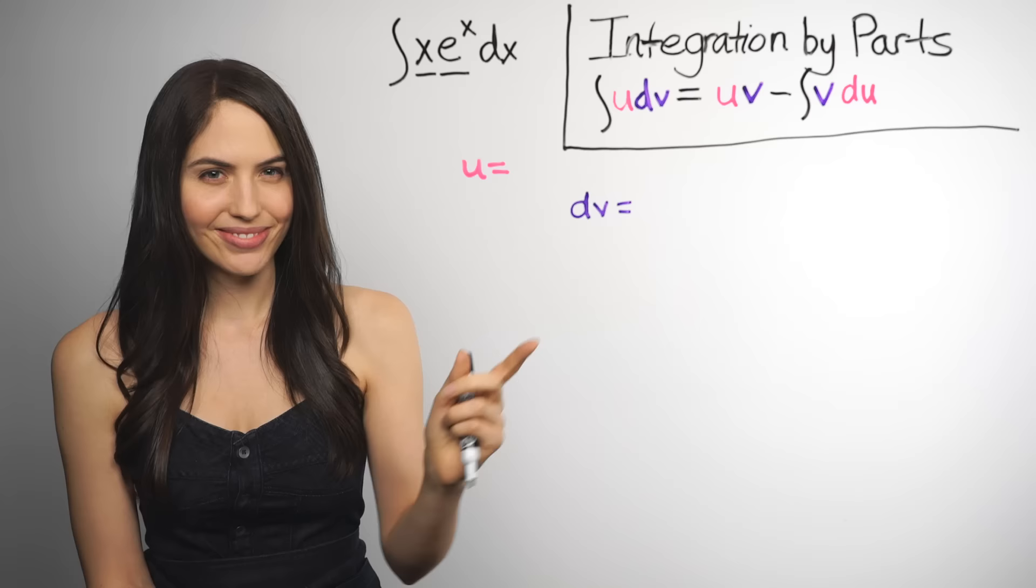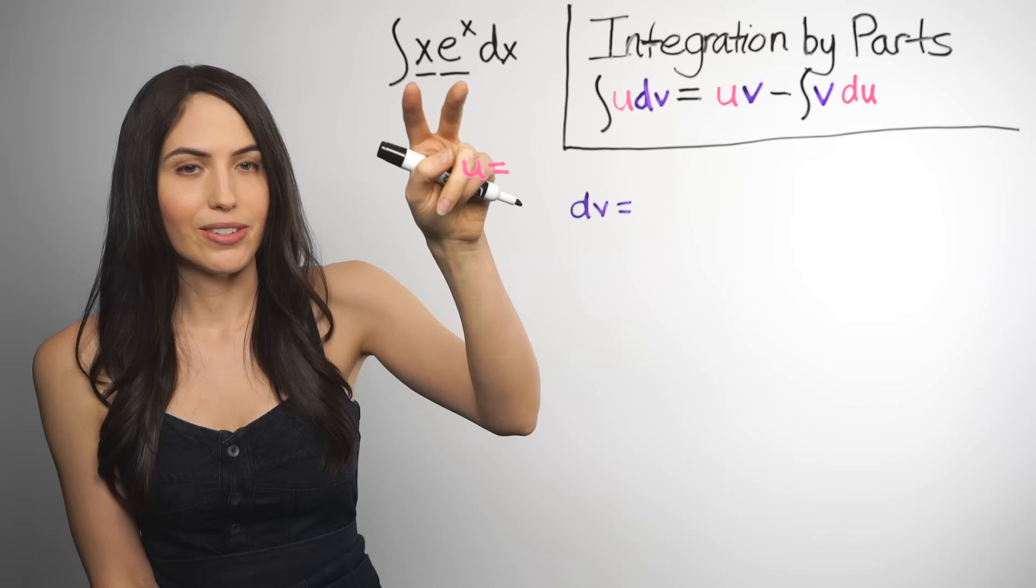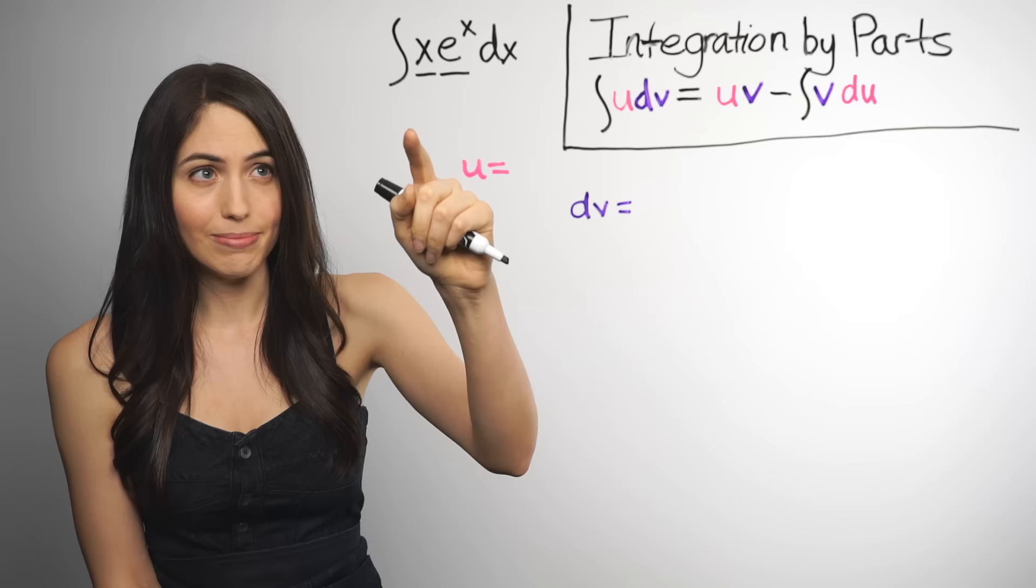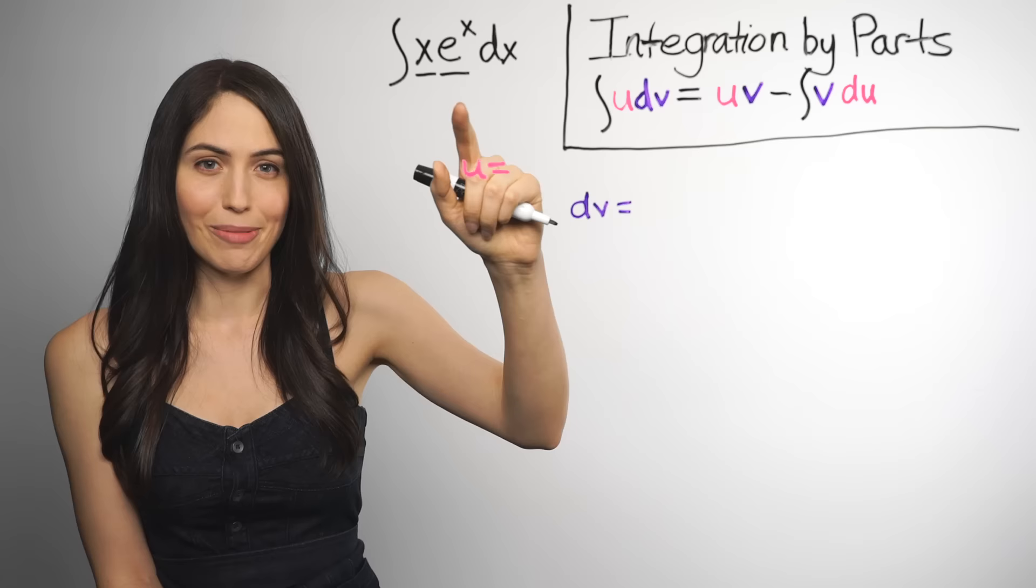And if this all sounds really confusing, that's because it is. So let me show you what I mean in this one. Which of our two factors, x or e to the x, gets simpler when you take the derivative of it? Well, the derivative of x is just 1. That's simpler. If the x dropped out, it's a lower order or degree or power. The derivative of e to the x is just e to the x again, which is not simpler. So probably our u is going to be x.